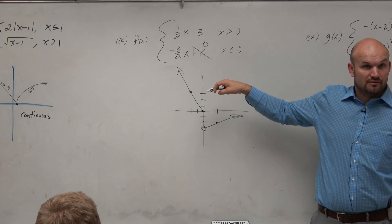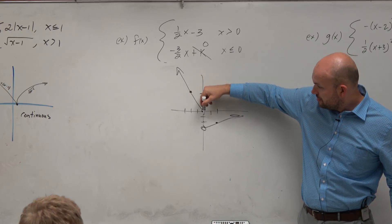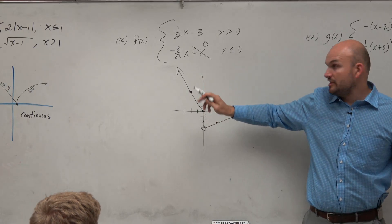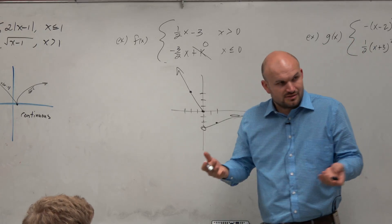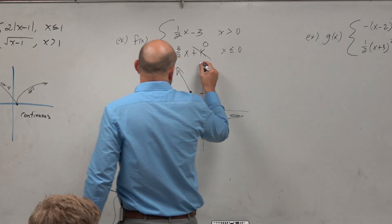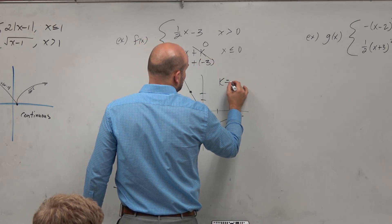So I basically need to move this function down 1, 2, 3 units. So then what value of k would make that shift down 3 units? Negative 3. Negative 3, because that's just the y-intercept, right? So negative 3. So k equals negative 3.